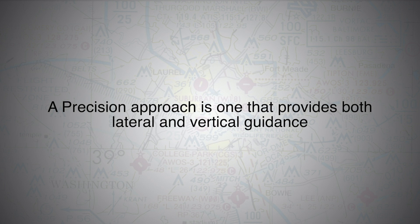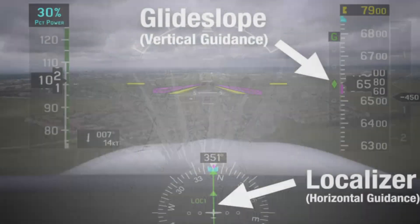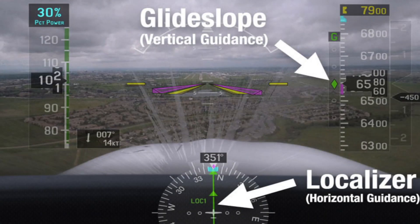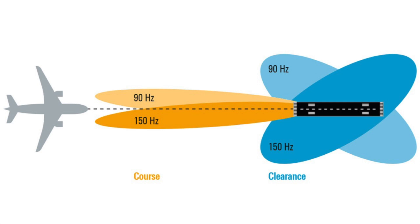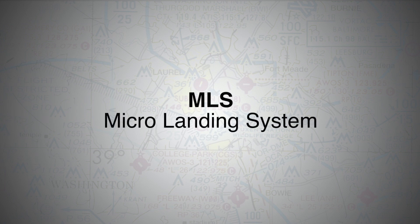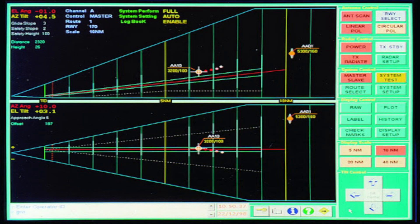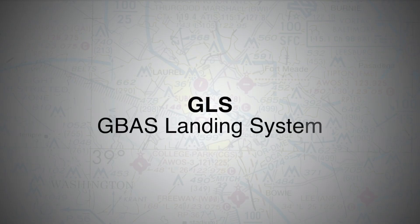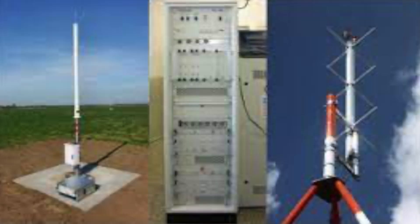Let's do a quick recap before we dig deeper. A precision approach is one that provides both lateral and vertical guidance, such as the most common one — the ILS or Instrument Landing System, which broadcasts two lobe signals in both azimuth as well as the vertical path to guide the aircraft down to the threshold. We also have MLS (Micro Landing System), no longer in use, and PAR (Precision Approach Radar), usually used by the military.